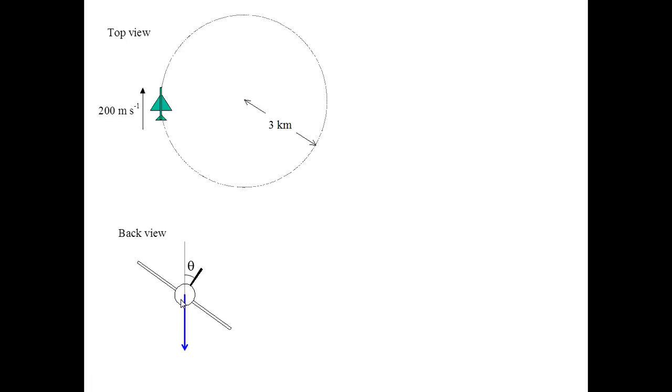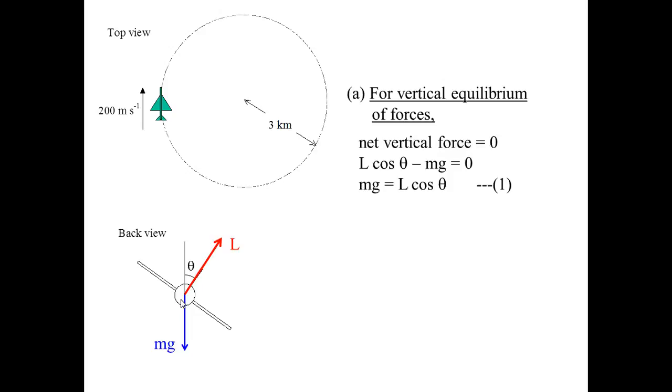To do that, we start with a free body diagram. I will have the weight of the plane and the lift that is exerted by the air around the plane. For vertical equilibrium, because you are told that the plane is moving round in a horizontal circle, vertically it should be in equilibrium.